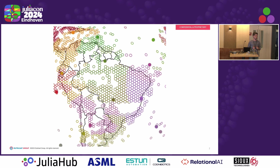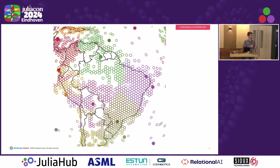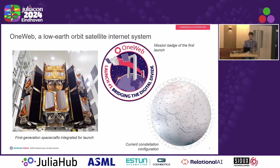I'll cover the technical details of the architecture of this tool, and then give some general pointers on what we found easy and what we didn't find easy in switching to Julia. I work at the systems engineering team at UTILSAT Group, and more specifically in the OneWeb division, which is in charge of low-orbit satellite internet constellations.